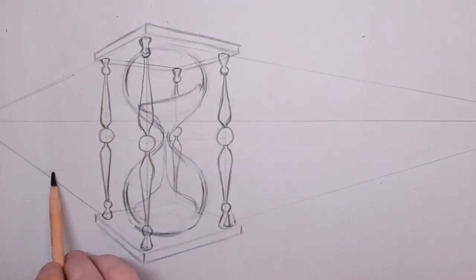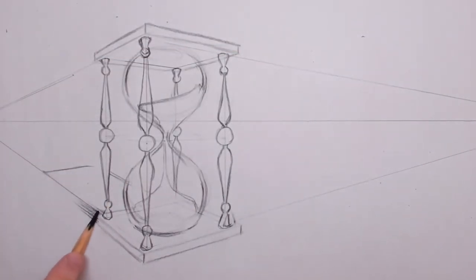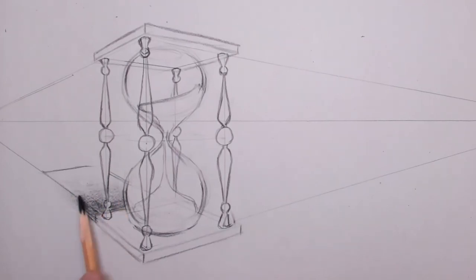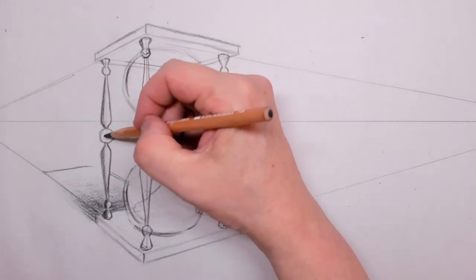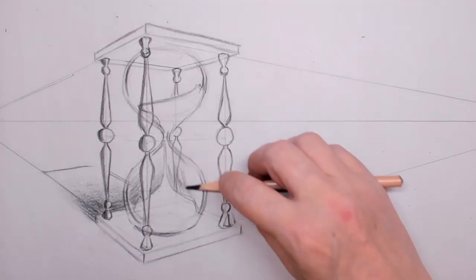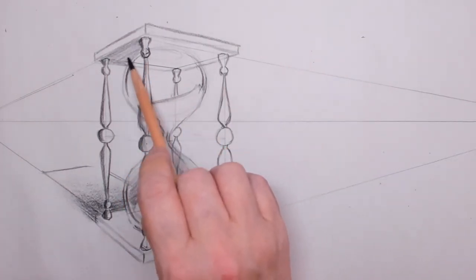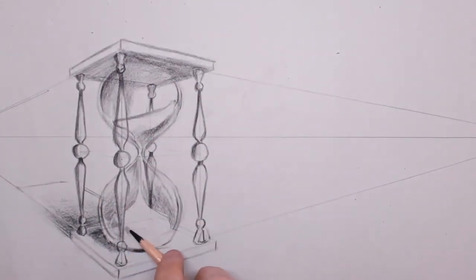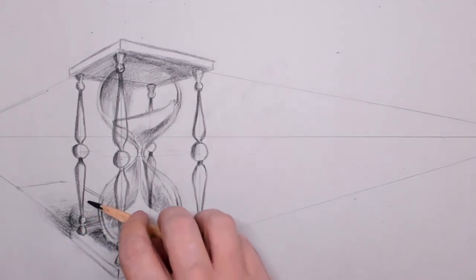This is the pillar on the back, you can partly see through the glass but not through the sand. Now that I have that hourglass standing there, I can start to put in some shadows. I decided to put the light source on the right top, so the shadow will fall behind the hourglass. This helps me create more feel of 3D.